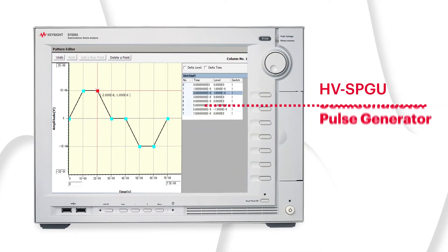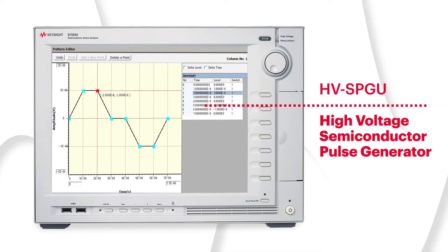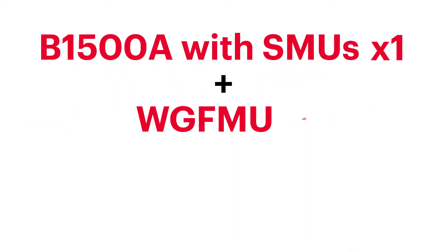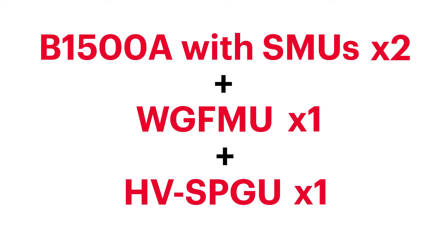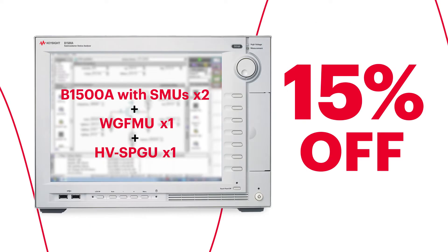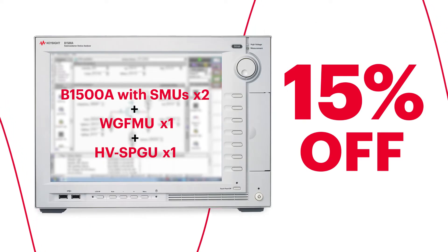The High Voltage Semiconductor Pulse Generator, or HVSPGU, can output a maximum of ±40 volts with 3-level pulsing and arbitrary waveform generation capabilities. When you order the B1500A with two SMUs, WGFMU, and HVSPGU, you can save up to 15% off the price compared to purchasing the same items separately.